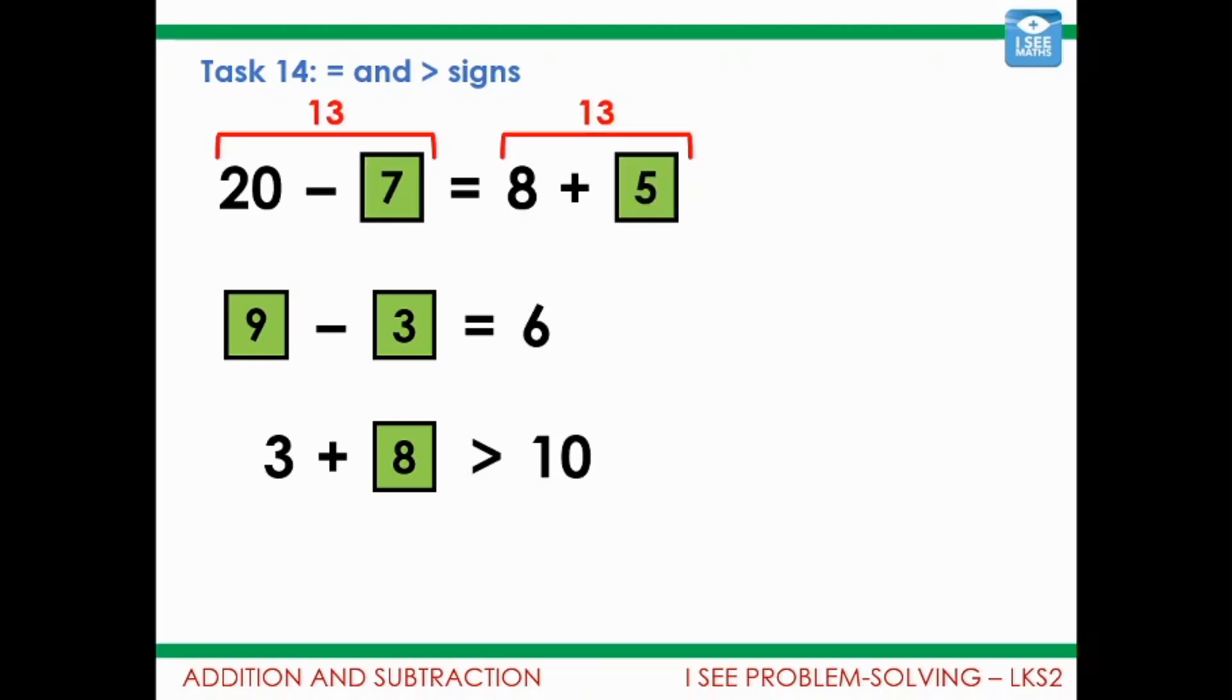And so that leaves us needing to fill in that top line. We need to make them the same. So 20 subtract 7 is 13, 8 plus 5 is 13. There we go. They're now the same. Positioned absolutely perfectly.